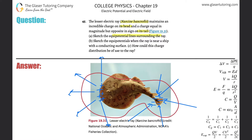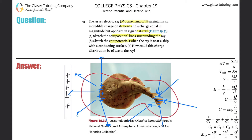For part B, sketch the equipotentials when the ray is near a ship with a conducting surface. It depends on the charge of the ship — let's pretend this is a charged ship. If it's positive, the field lines start to deflect away from one another. The equipotentials are going to look something like — well, something quite complex and hard to draw here.